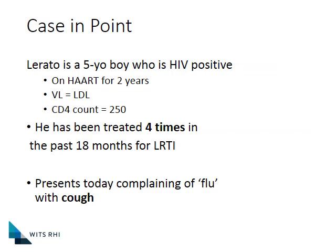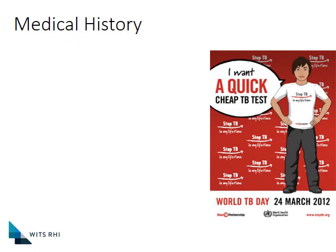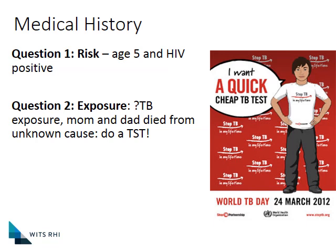I want to go back to a case we discussed in the first presentation — a five-year-old boy, suppressed on ARVs, with a history of being repeatedly treated for lower respiratory tract infections. Now he has re-presented with his cough. The question is: how do we approach investigations? Do we give antibiotics again, or put him straight on TB treatment? Let's go through this case using our five questions. Question one — what is the risk? This child is five years old and HIV-positive, so if he has been infected with TB there is a high risk that infection will progress to TB disease.